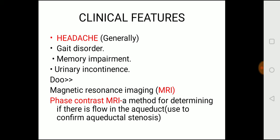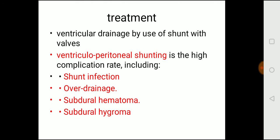Clinical features of non-communicating hydrocephalus: headache, gait disorders, memory problems, and urinary incontinence. Perform an MRI to check for stenosis in the ventricles. Phase contrast MRI is a special procedure used to determine if there is flow in the aqueduct — used to confirm aqueductal stenosis. Treatment is ventricular drainage by VP shunt. Complications include shunt infection, over-drainage, subdural hematoma, and subdural hygroma.